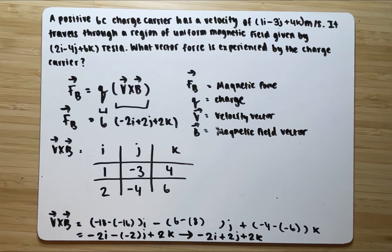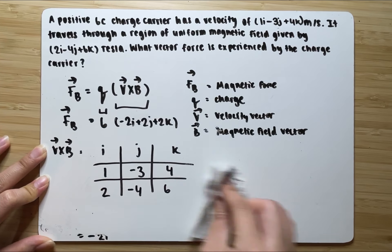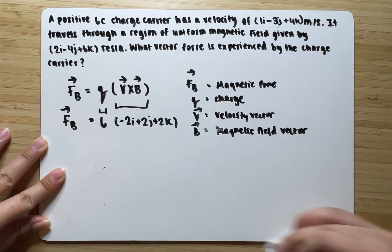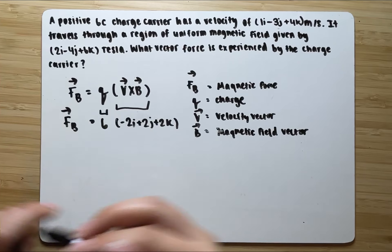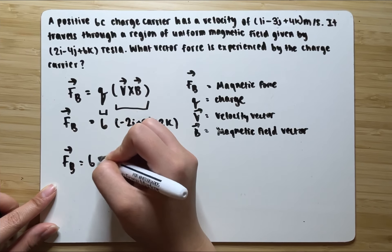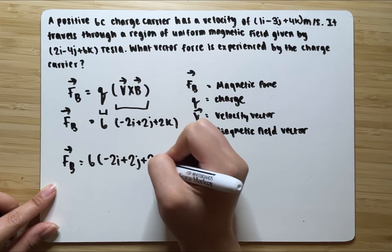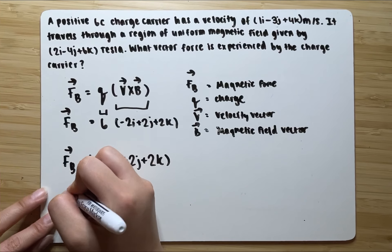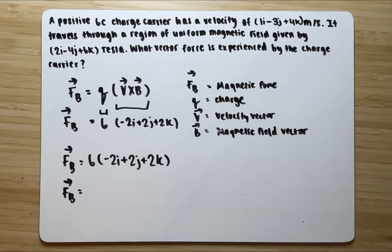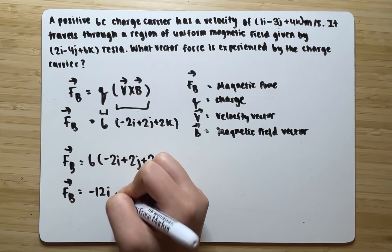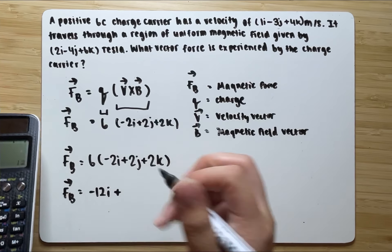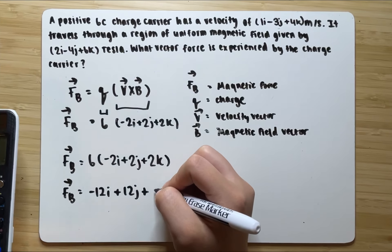Now what we need to find is our magnetic force vector. Given that we have our charge and our cross product between V and B, rewriting this we have 6 times negative 2i plus 2j plus 2k. We don't need a calculator for this one: 6 times negative 2 is negative 12, so we have negative 12i; 6 times 2 is 12, so we have 12j; and 6 times 2 is 12 again, so we have 12k.